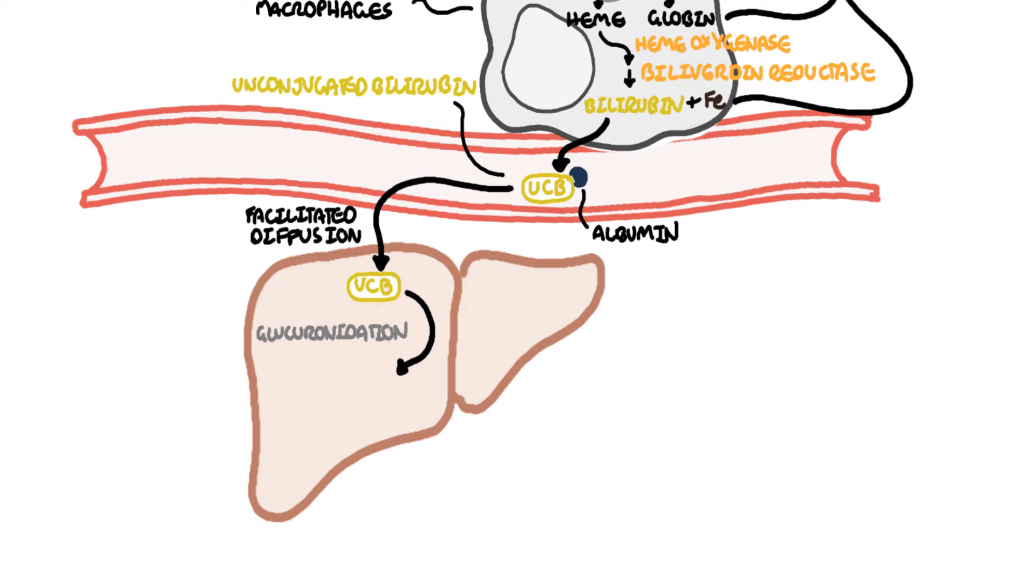Glucuronidation is carried out by a family of enzymes called uridine diphosphoglucuronate glucuronosyl transferase, or UGT. In the case of bilirubin it is bilirubin UGT. The unconjugated bilirubin is now conjugated bilirubin and is water soluble. It is secreted into the biliary system and is a component of bile.